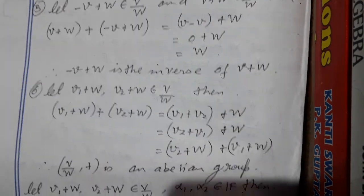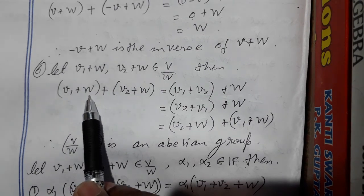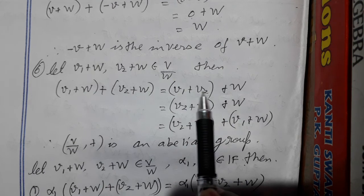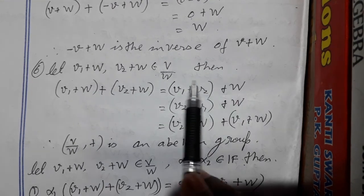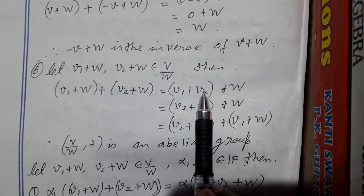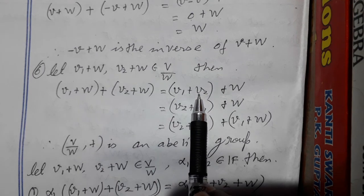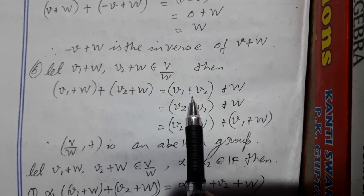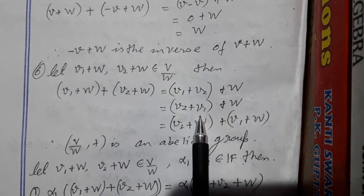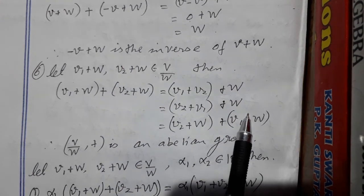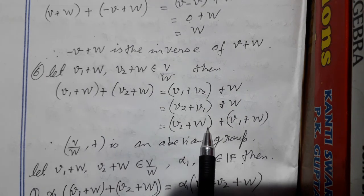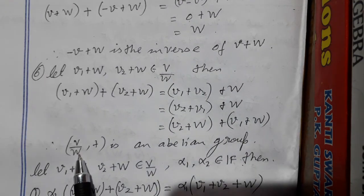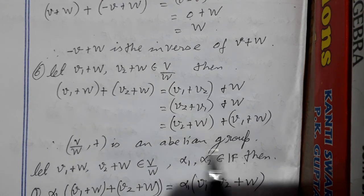To show V/W is abelian: (V1 + W) + (V2 + W) = V1 + V2 + W. Since V is an abelian group, V1 + V2 = V2 + V1, so this equals V2 + V1 + W = (V2 + W) + (V1 + W). Hence V/W is an abelian group.